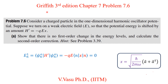Today we will solve problem 7.6 from Chapter 7 of Griffiths 3rd edition, Introduction to Quantum Mechanics. The problem consists of two parts. In Part A, we consider a charged particle in a one-dimensional harmonic oscillator potential. We turn on a weak electric field E so that the potential energy is shifted by H' = -QEX. We must show there is no first-order change in the energy level, and calculate the second-order correction.